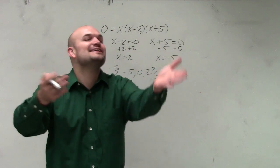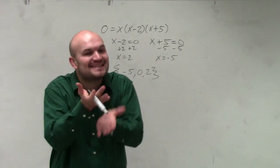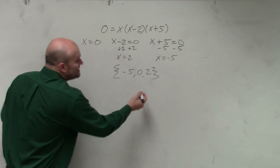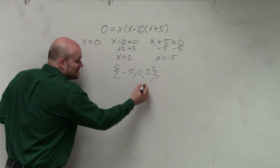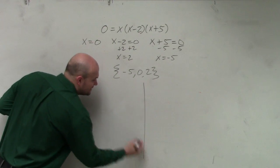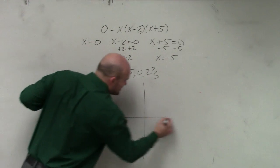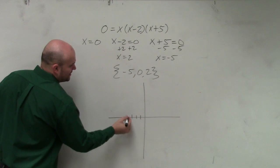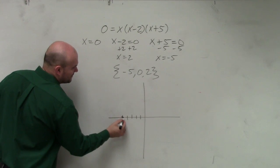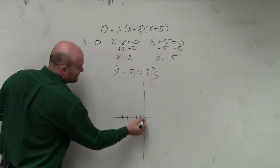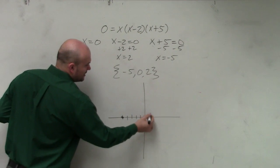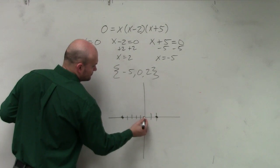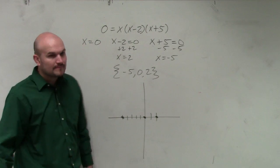The x-intercepts. Yes — the x-intercepts. So these are the x-intercepts and these are the solutions. We have negative 5, and we have 0, and we have 2. Those are the x-intercepts.